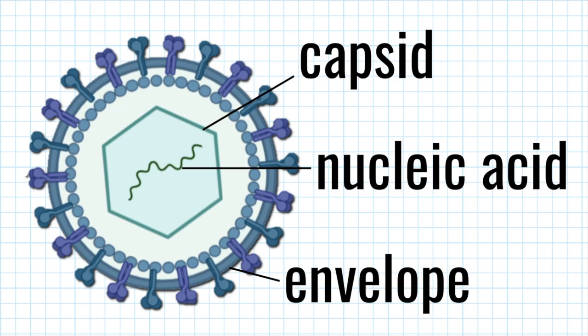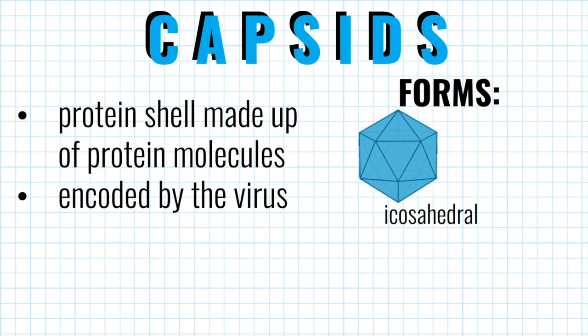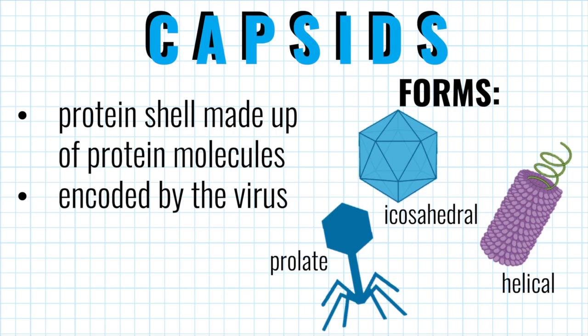The capsid is also known as the protein shell of a virus, and it's made up of protein molecules. Capsid proteins are always encoded by the virus genome, meaning the virus provides the instructions needed to make them. Capsids are found in many different forms, but some of the most common are icosahedral — named after the 20-sided shape called an icosahedron — helical, named after its linear, thin, thread-like appearance, and prolate, which is a hybrid between the helical and icosahedral shapes.